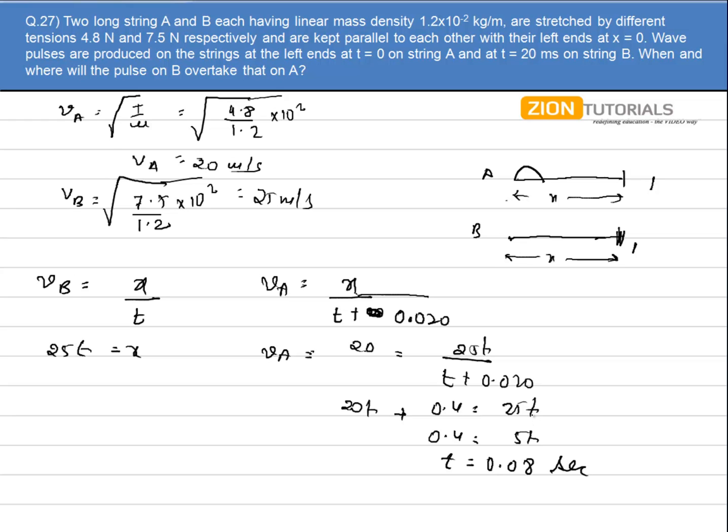Now this is the time after which B will overtake A, and we have to calculate where. So we have to calculate x. It will be 25 times 0.08 equals x, so x comes out to be 2 meters.